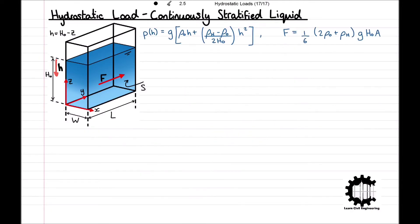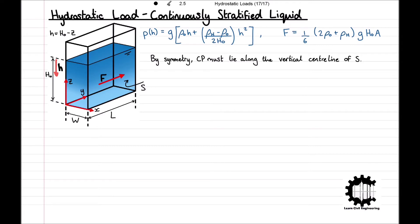In previous videos we found the centre of pressure for horizontal and vertical surfaces with homogeneous liquid. In this video we use intuition: by symmetry, the centre of pressure cp must lie along the vertical centre line of S in terms of the x coordinate. Links to previous videos with full manual calculations are in the description.